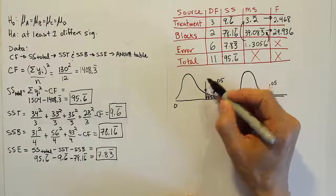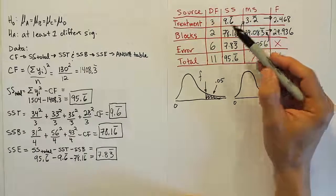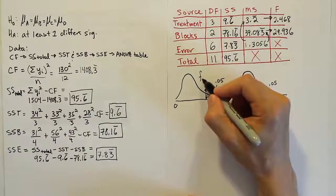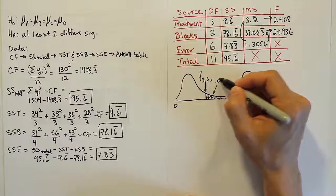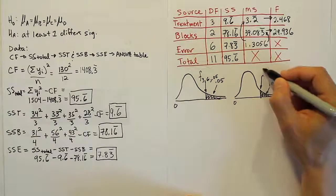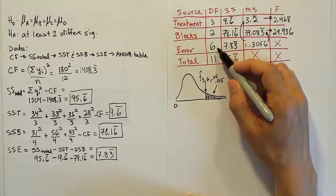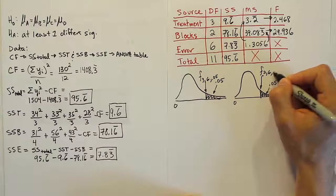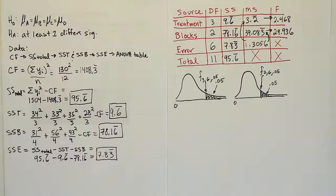And our critical value, remember what it's going to be here. This critical value is going to be F. The one for treatments, we're going to have numerator degrees of freedom, 3. Denominator degrees of freedom is the error degrees of freedom. That's 6. And then 0.05. And for this one, this is the one for blocks, we'll have F, the blocks degrees of freedom is 2, comma 6, because the denominator was the error again, and then 0.05. So, let's go to our table, and we're going to look up 3, 6, 0.05 and 2, 6, 0.05, and we'll get our two critical values.